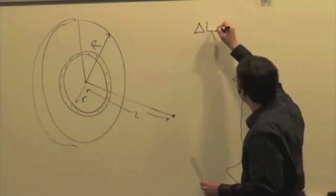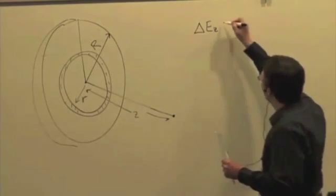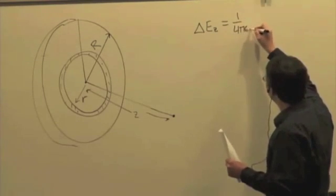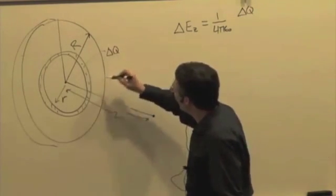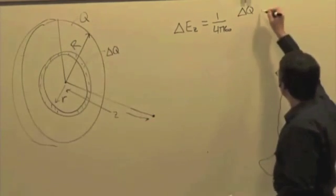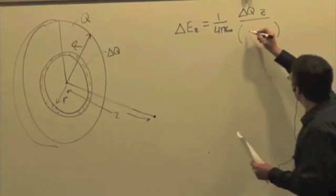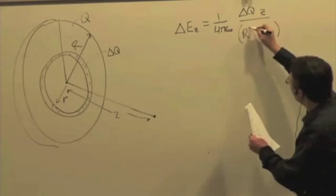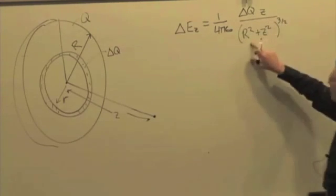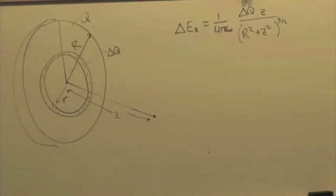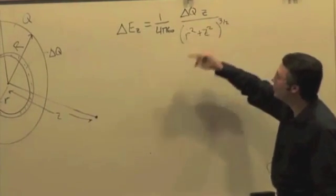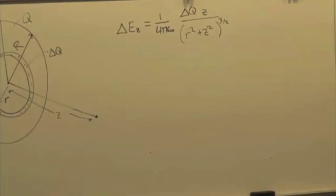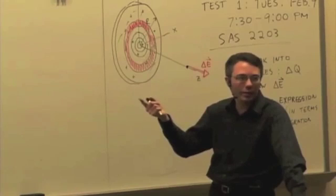The delta E — really just the z-component here — is equal to 1 over 4πε₀, times delta Q (the charge of the ring) times Z, over (little r² + Z²) to the 3/2. We use little r because we're looking at the electric field due to one little slice. If we used capital R, that would give the ring at the outer edge, but we want a variable that changes as we move from one ring to the next.